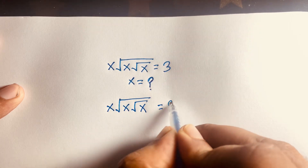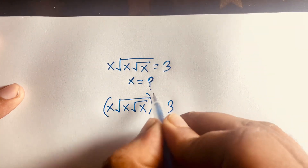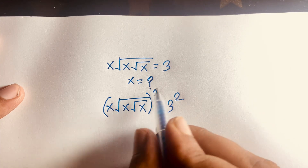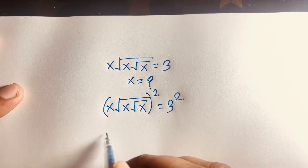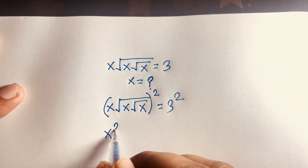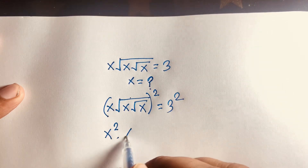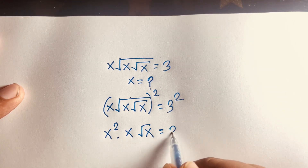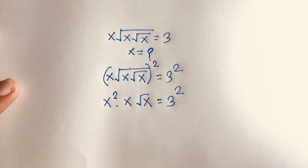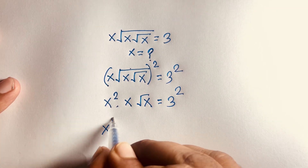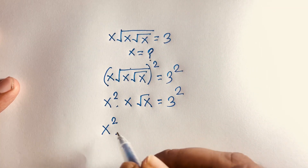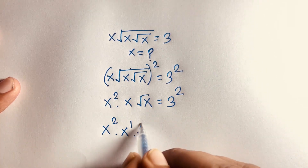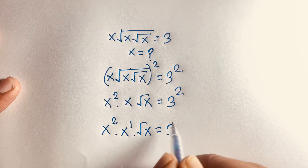To solve this, I square both sides to eliminate the outer square root. Squaring gives us x squared times the square root of x, so we have x to the power 2 times square root x on the left, equal to 3 squared on the right.